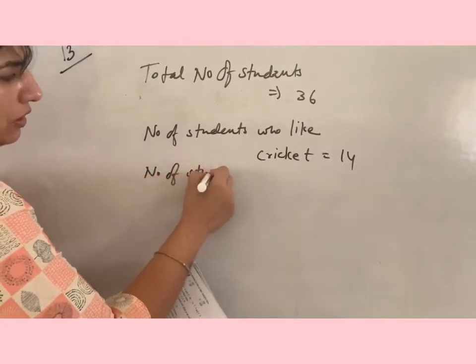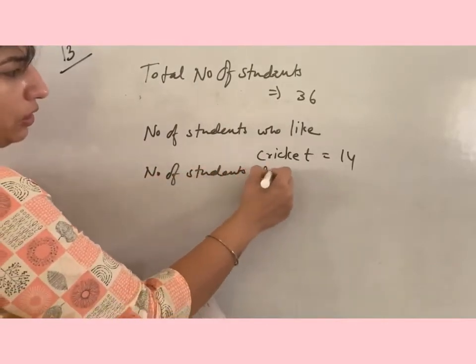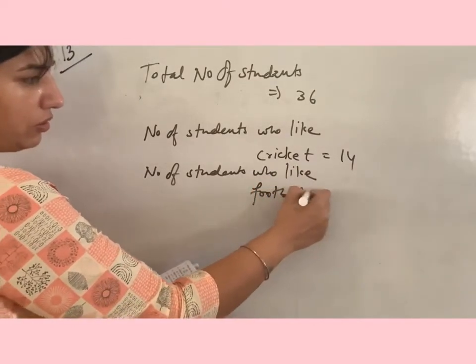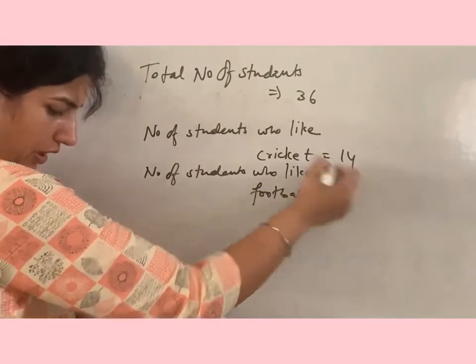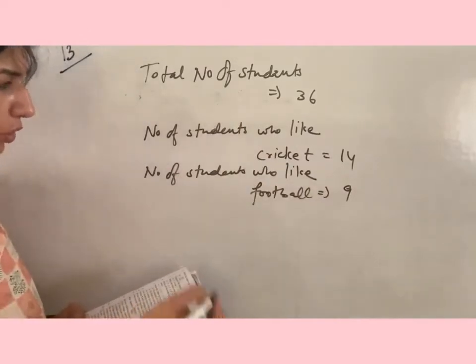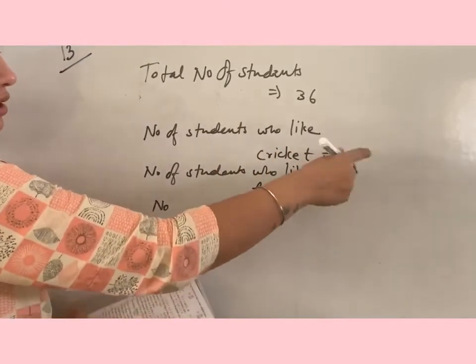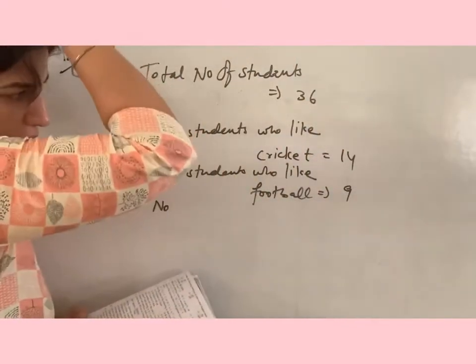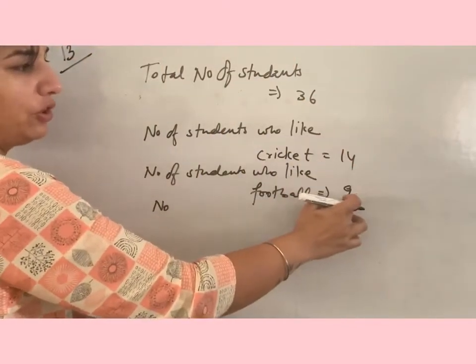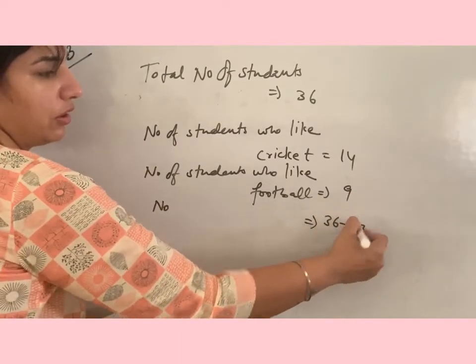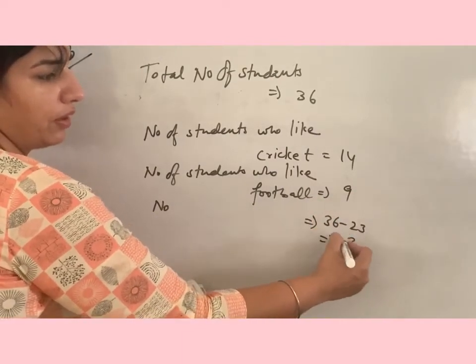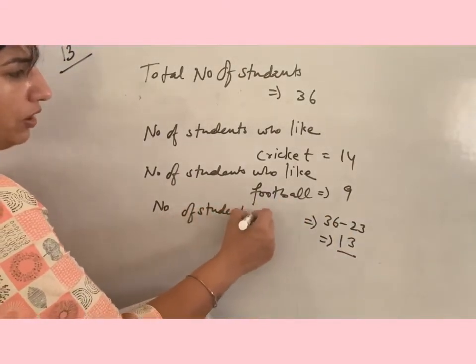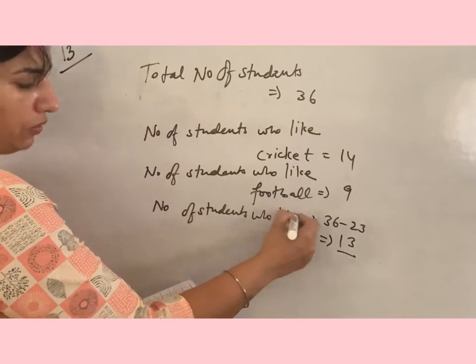Remaining like volleyball, so we have to subtract the addition of these two numbers from this number. So 14 plus 9 equals 23, and we will find out this number, the number of students who like volleyball.